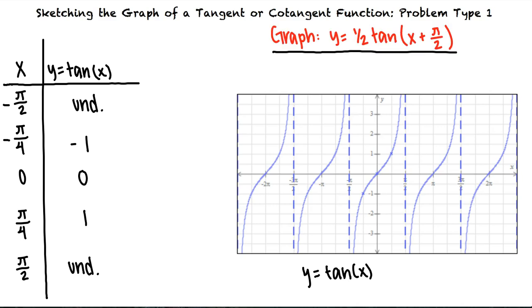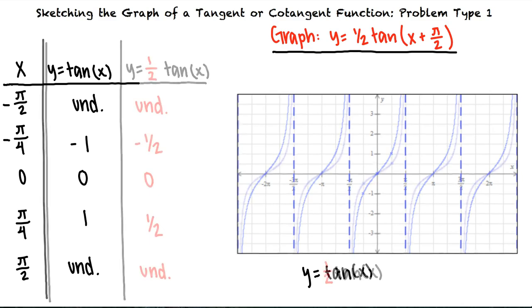To account for the one half multiplied to the function we will multiply the y coordinates of the original tangent graph by one half. We see that multiplying the y coordinates of the original graph of y equals tangent x results in a vertical shrink of the graph.